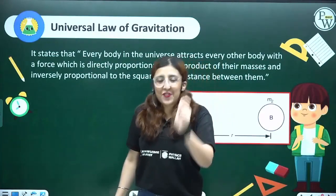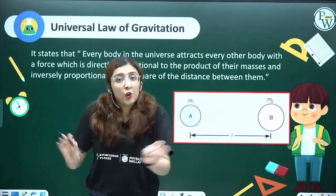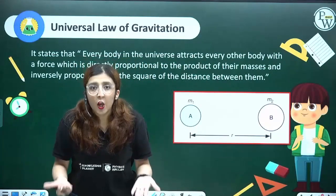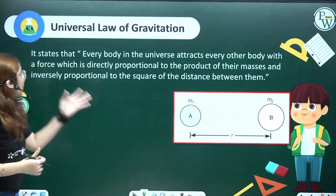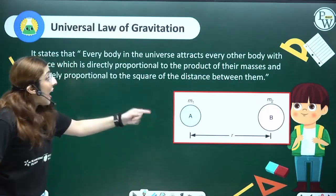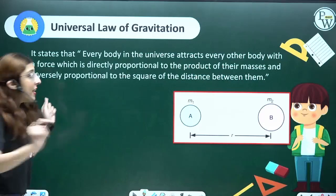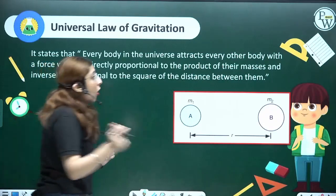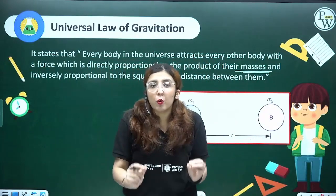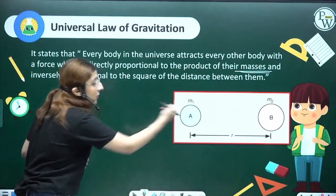Whenever in physics there is any law, you have to memorize the statement as it is — don't make up the statement on your own. The universal law of gravitation states: every body in the universe attracts every other body with a force which is directly proportional to the product of their masses and inversely proportional to the square of the distance between them.